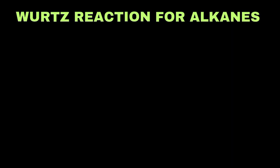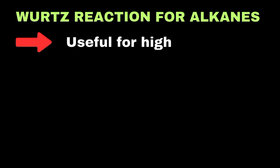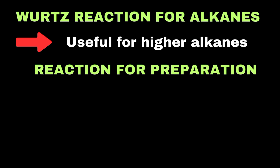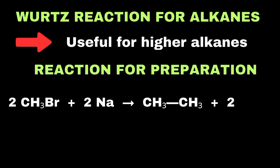The Wurtz reaction is used to prepare higher alkanes. In this method, alkyl halides react with sodium in dry ether to form alkanes. For example, two molar concentrations of methyl bromide react with two molar concentrations of sodium to form one molar concentration of ethane and two molar concentrations of sodium bromide.